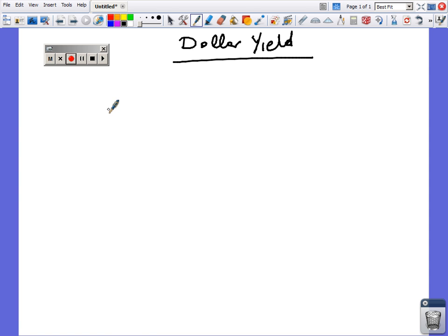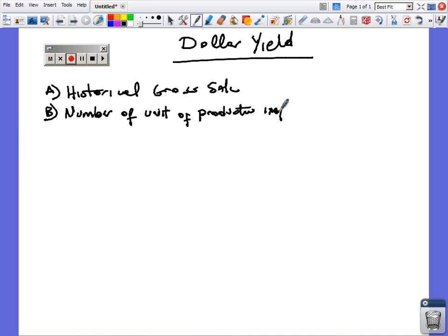We will need three specific categories of numbers to work with dollar yield. One, historical sales, that is historical gross sales. Two, the number of units of production input, that is a specific item input, and we'll call this item A.